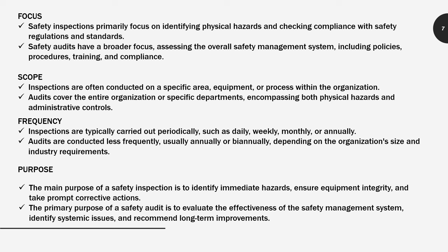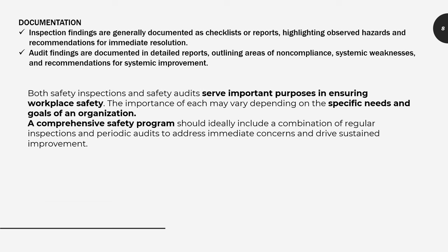The purpose of a safety inspection is to identify immediate hazards, ensure equipment compliance, and take prompt corrective actions. The purpose of a safety audit is to evaluate the effectiveness of the safety management system, identify systematic issues, and recommend long-term improvements.